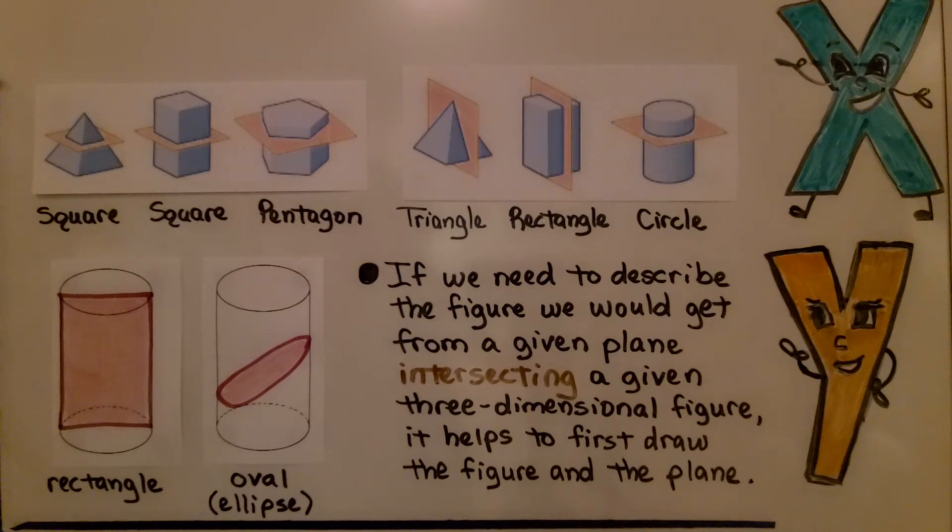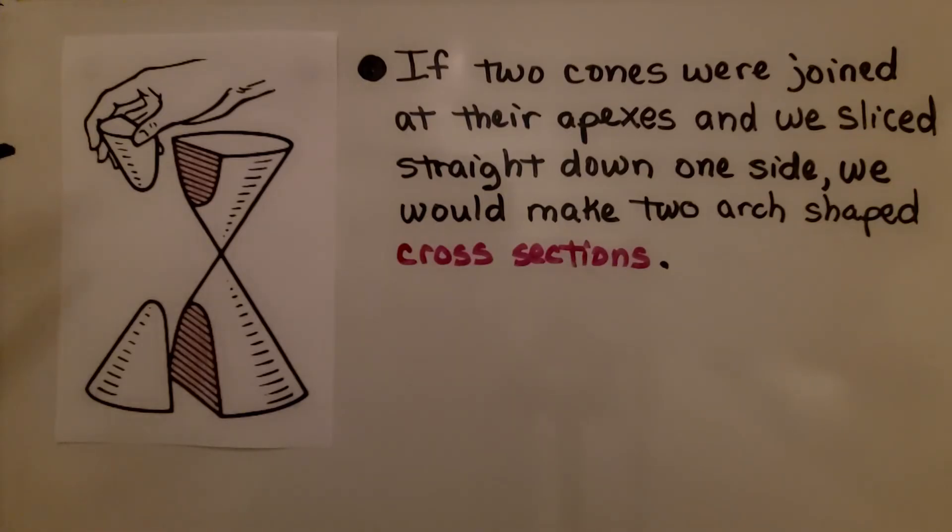If we need to describe the figure we would get from a given plane intersecting a given three-dimensional figure, it helps to first draw the figure and the plane. If two cones were joined at their apexes and we sliced straight down one side, we would make two arch-shaped cross sections. See?